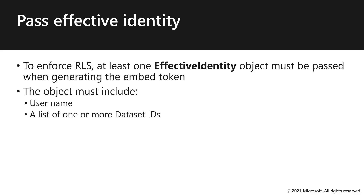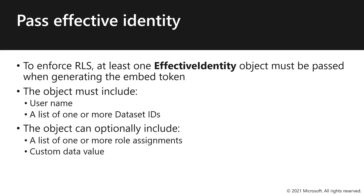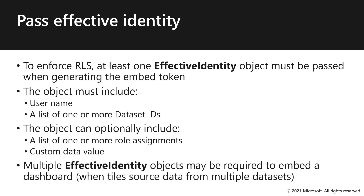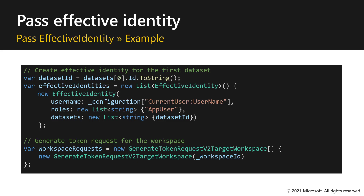The object must include a username and a list of one or more dataset IDs. The object can optionally include a list of one or more role assignments and a custom data value. Multiple effective identity objects may be required to embed a dashboard when tile source data comes from multiple datasets. In this code example, a single effective identity is instantiated. You can see that we configure the username as the current user's username, the roles are set to app user, and the list of datasets that this effective identity applies to.